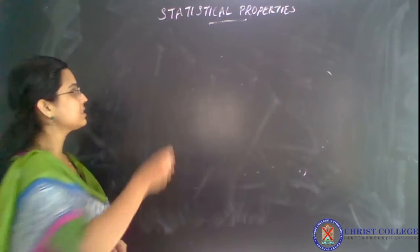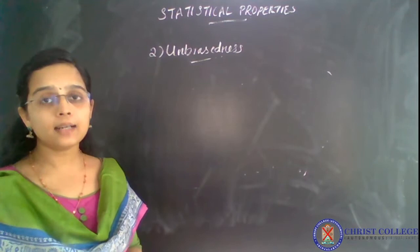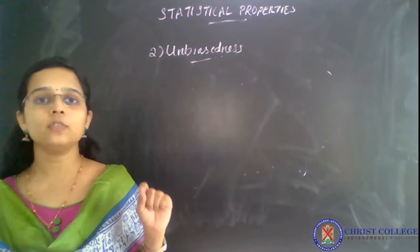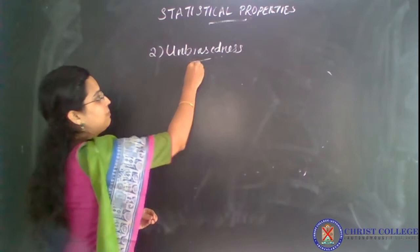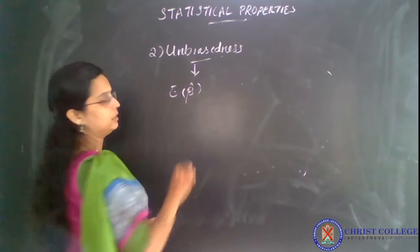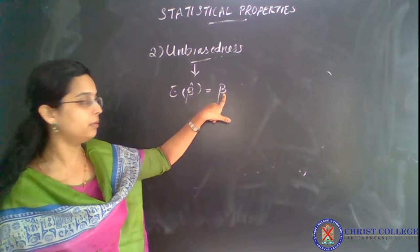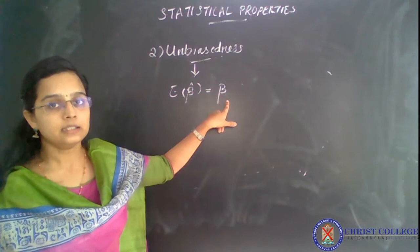The second property of least square estimators is unbiasedness. An estimator beta hat is unbiased if the expected value, or mean value, of the estimator is equal to the actual value. That is the definition of unbiased nature. So, unbiased nature means the expected value of beta hat for any parameter or estimator will be equal to actual value. If this is the situation, it means beta hat is an unbiased estimator of beta — the expected or mean value of beta hat equals the true value of beta. This situation is called unbiased nature.